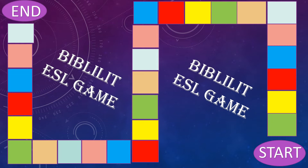You can either download the PDF of this game and print it for your personal learning, or you can use the board for teaching your students as well. This game can have a minimum of two students to a maximum of six. All you need is a dice and tokens — one token per player depending on the number of players.